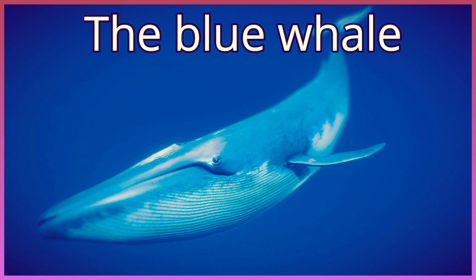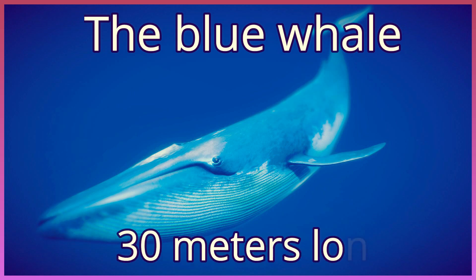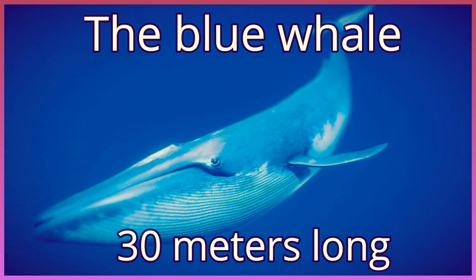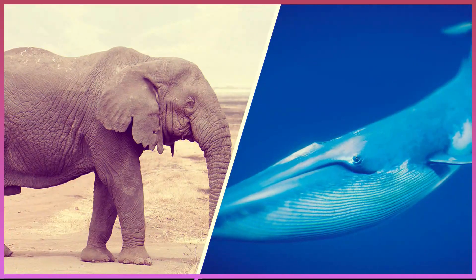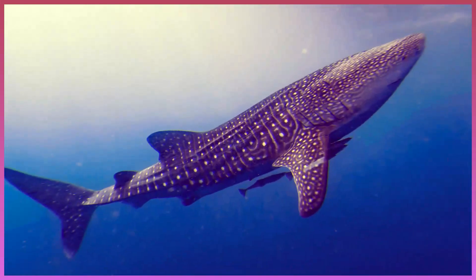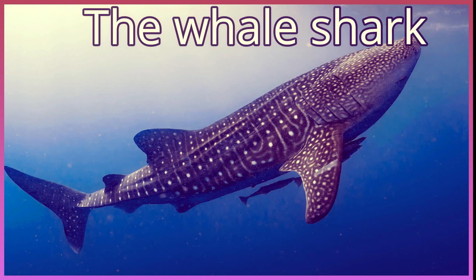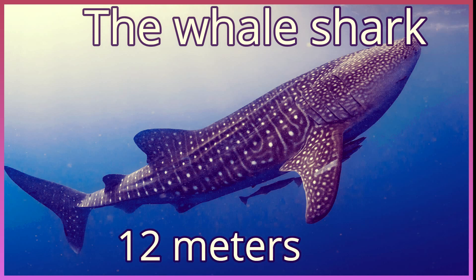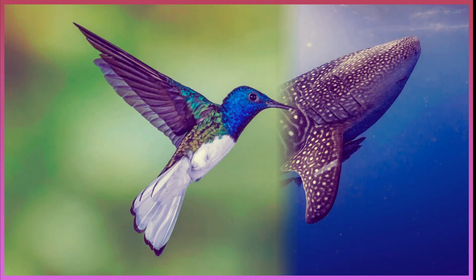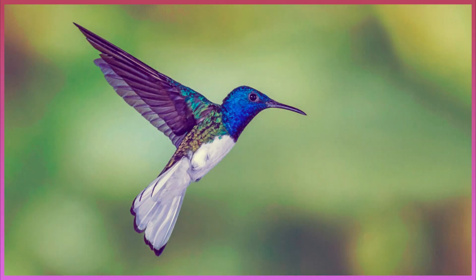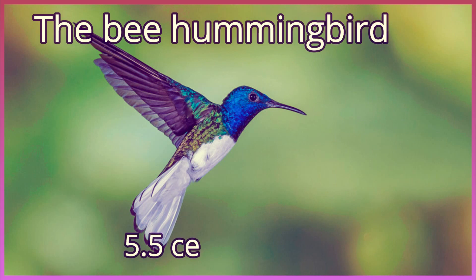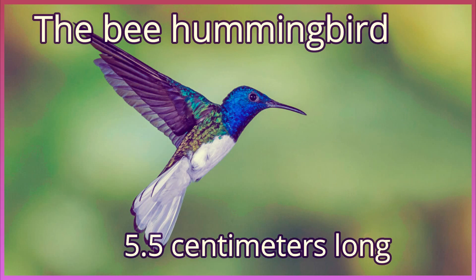It's the blue whale, and it can be up to 30 meters long. In fact, they are the biggest animals that have ever lived on Earth. The whale shark is the biggest fish in the world; it's smaller than the blue whale at about 12 meters long.